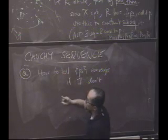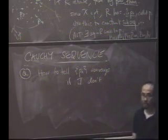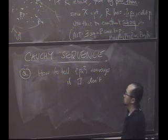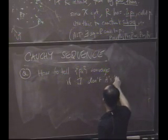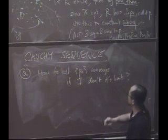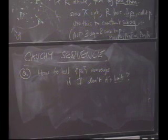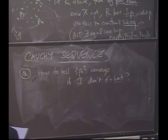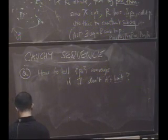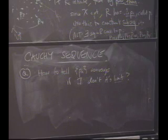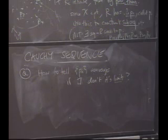If I don't know its limit, if I don't know its limit already. In other words, a lot of our definition as it stands now requires us to know what the limit is in order for us to sort of figure out if it converges. Okay, everybody appreciate the question? It's like, you know, you might have a sequence that you don't know if it converges or not, and you have no idea what its limit is. Is there a way to tell if the sequence converges without having to know its limit first?